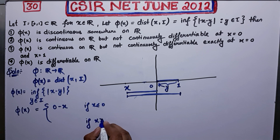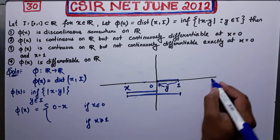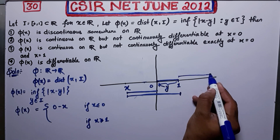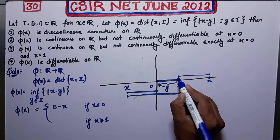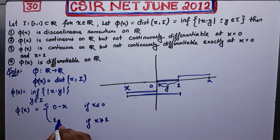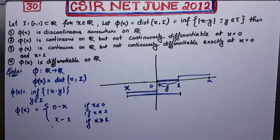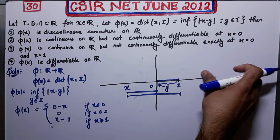Now suppose x is greater than or equal to one — it lies somewhere to the right. In order to get the infimum distance, you have to find the distance of x from one, so you get x − 1. And if x belongs to your interval I, then you will get zero as your answer. So this is your piecewise function φ(x).